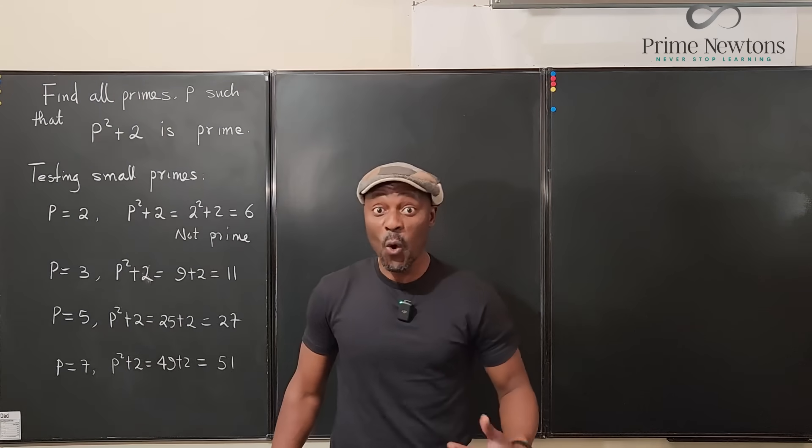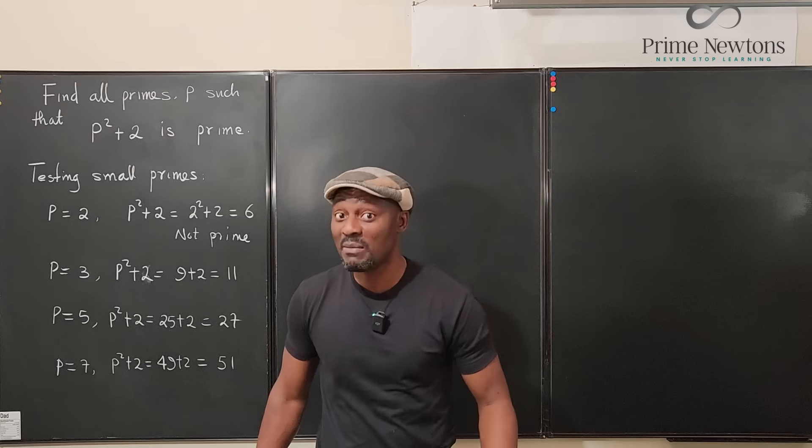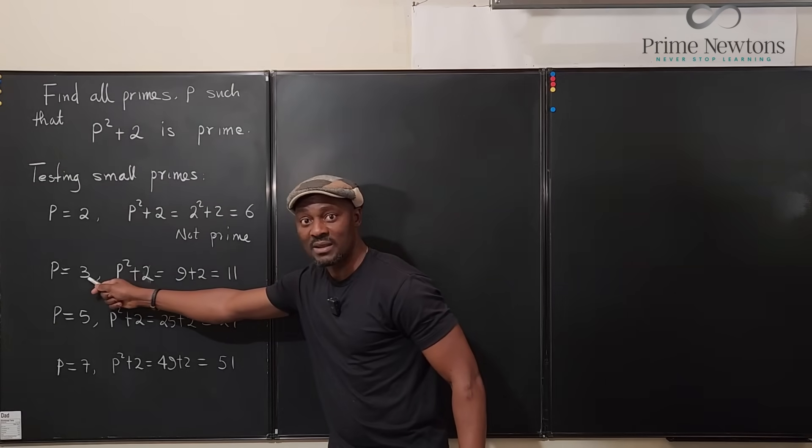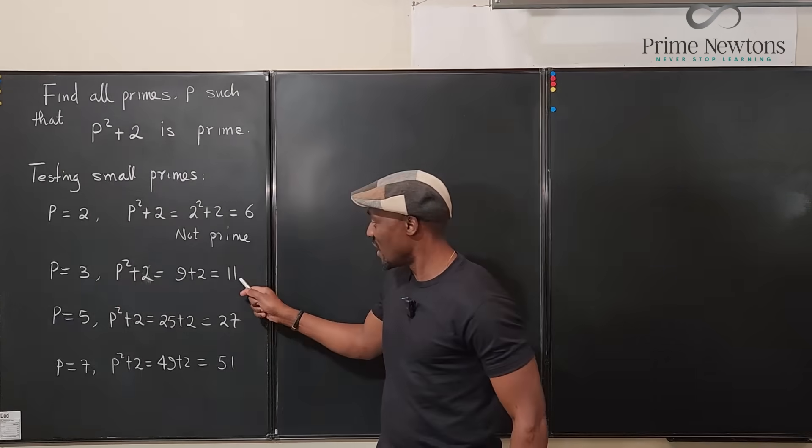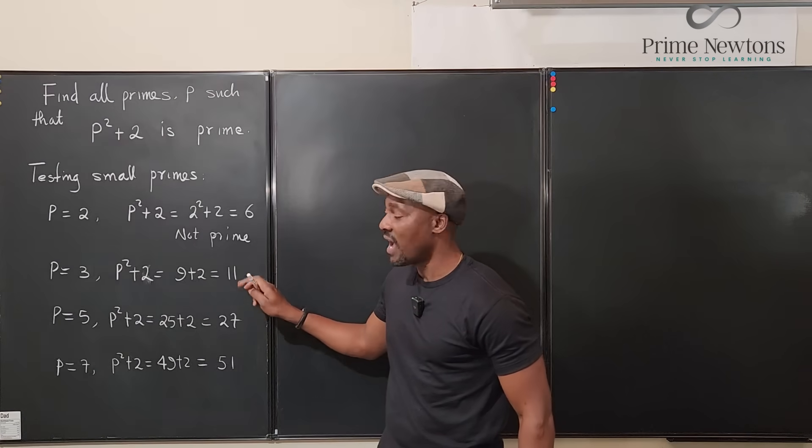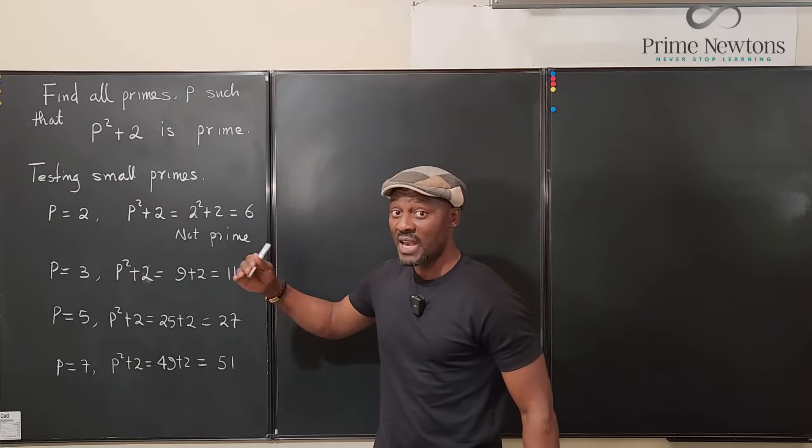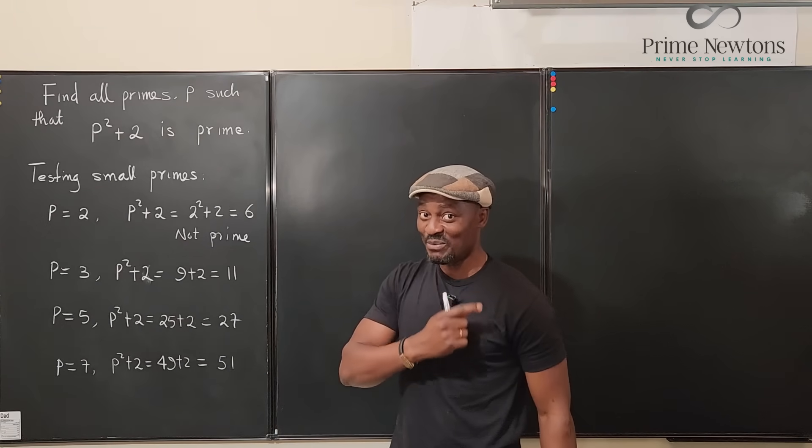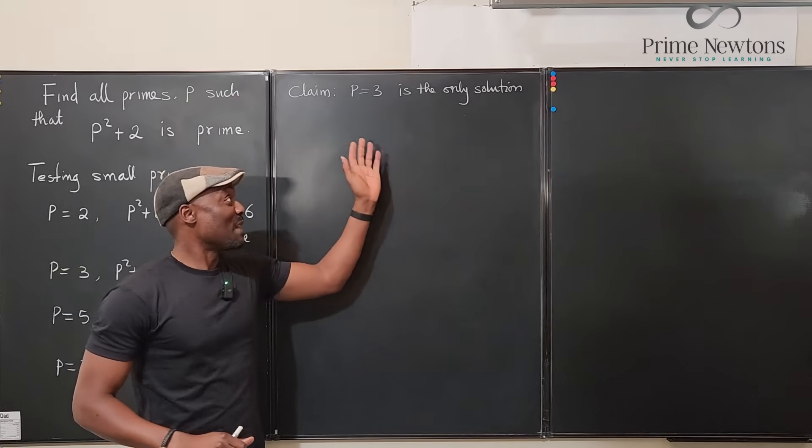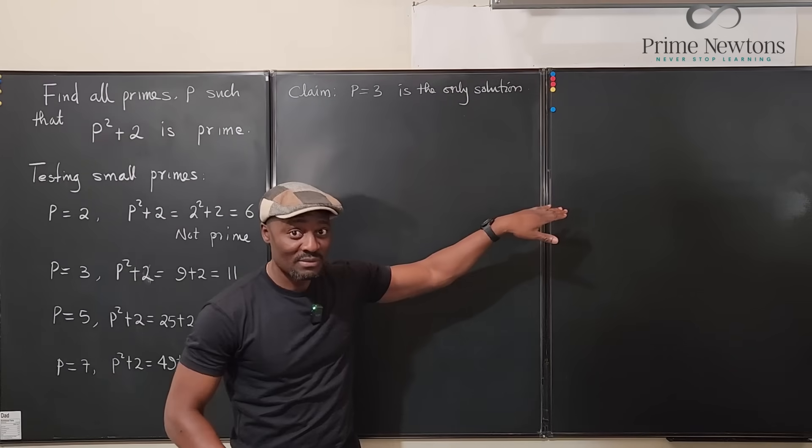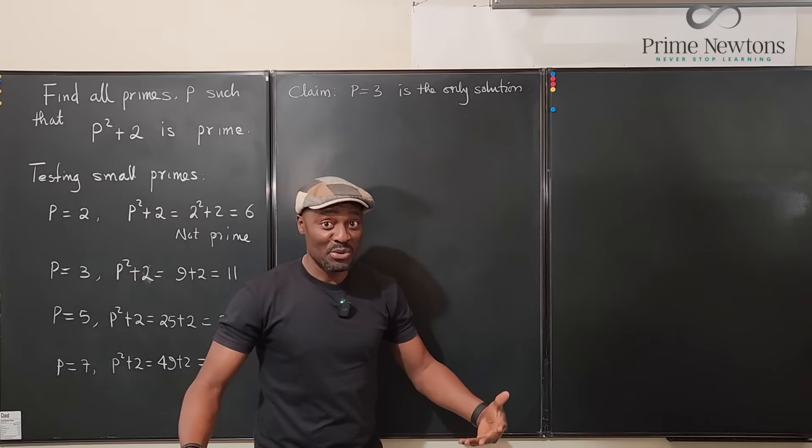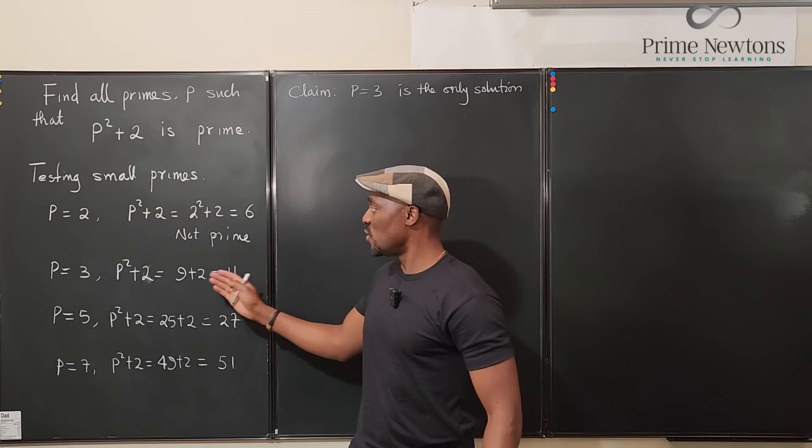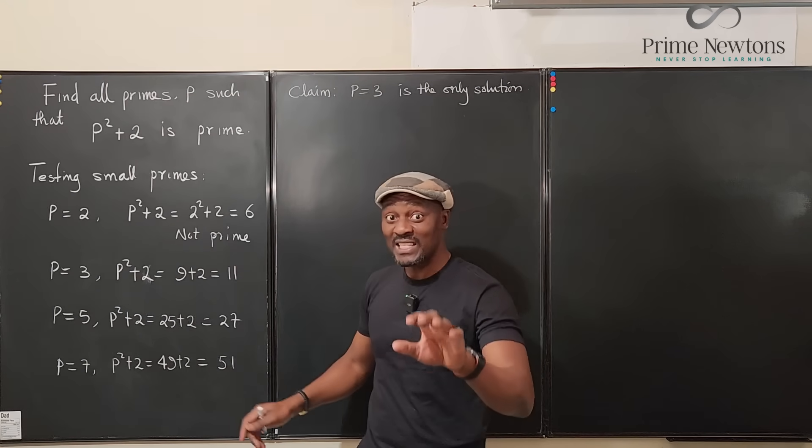So maybe we can keep trying or we might as well just make a claim that the only time you're gonna get a prime number is when the prime number is 3. You will not get another prime number on this side after squaring the number and adding 2 to it. That's the claim and we're gonna prove it.